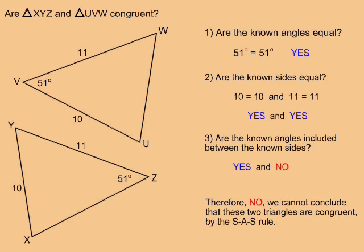Question 3: are the known angles included between the known sides? No. In one of the triangles, the 51 degree angle is located between the 10 unit and 11 unit sides, but in the other triangle, the 51 degree angle is not included between the 10 unit and 11 unit sides. Therefore, no, we cannot conclude that these two triangles are congruent by the SAS rule.